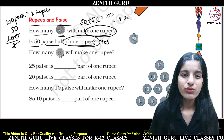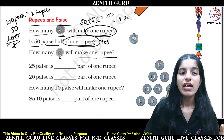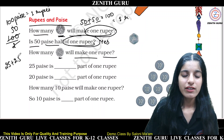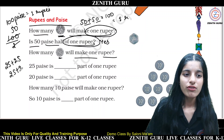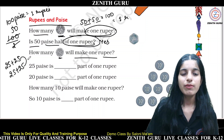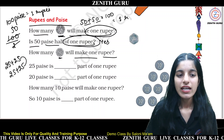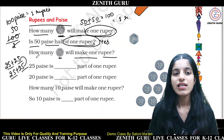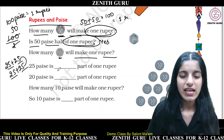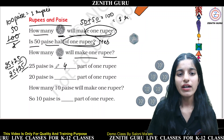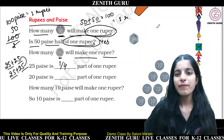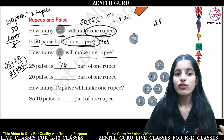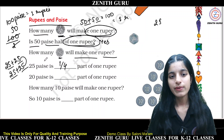How many 25 paise will make 1 Rupee? Half of 50 is 25. So 25 plus 25 is 50, and again 25 plus 25 is 50, and 50 plus 50 is 100. So we need 4 coins of 25 paise to make 1 Rupee. Therefore, 25 paise is the 1/4th part of 1 Rupee.